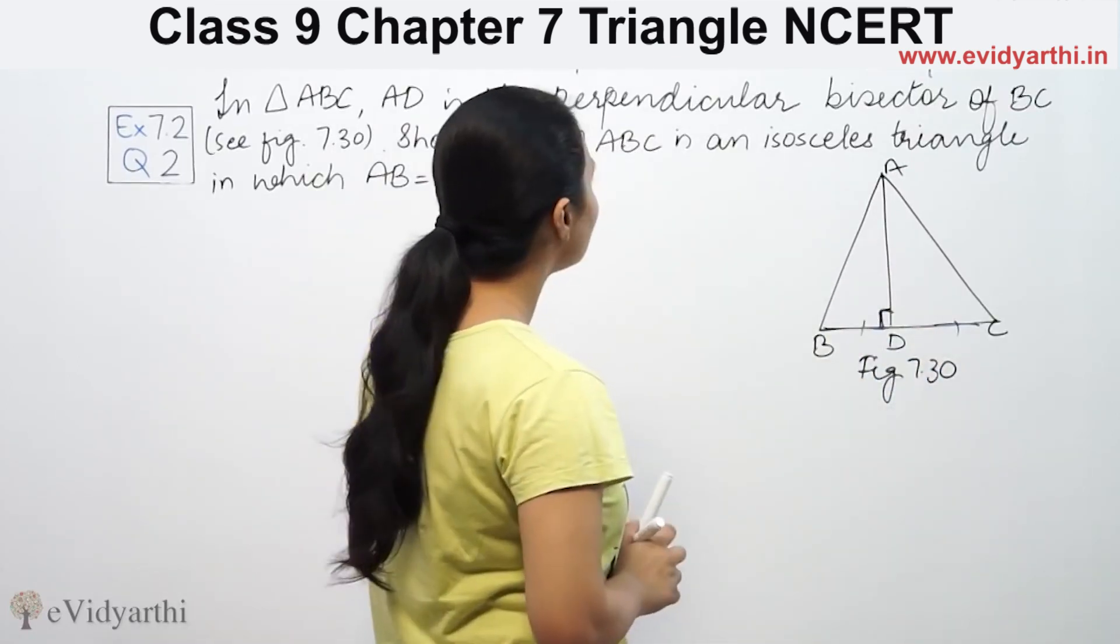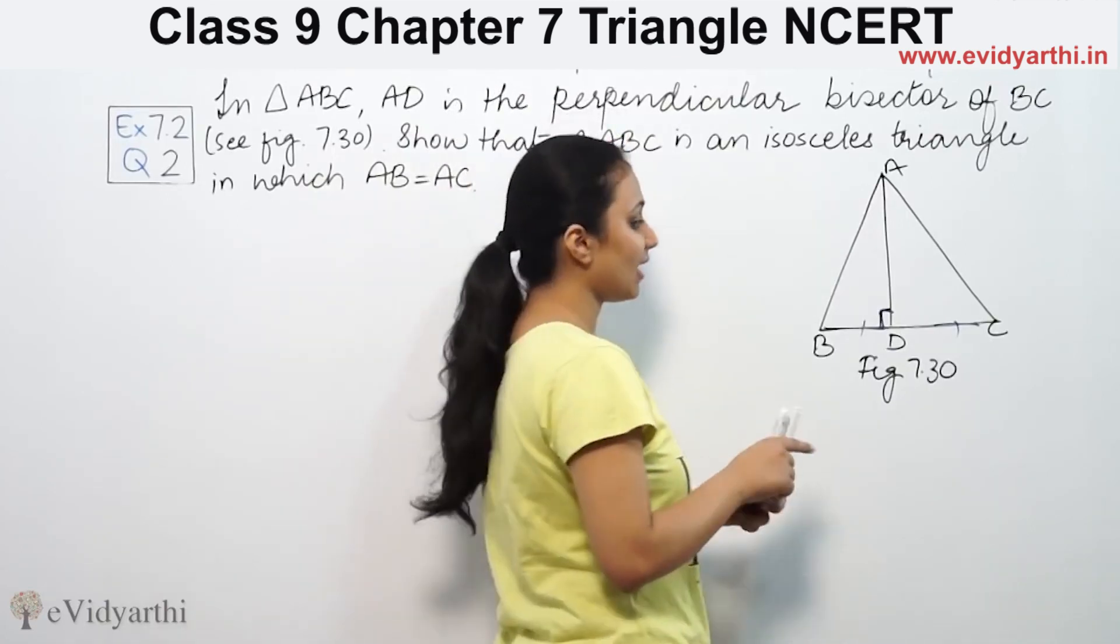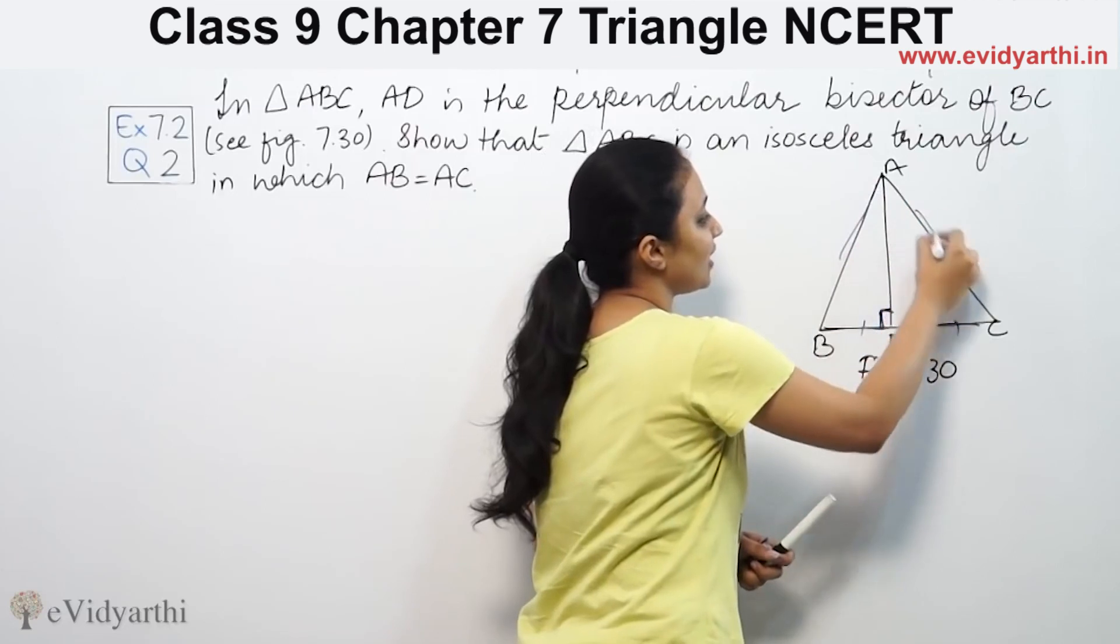Show that triangle ABC is an isosceles triangle in which AB is equal to AC. We have to prove that AB is equal to AC.